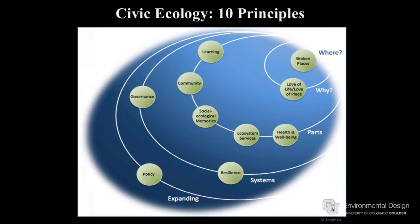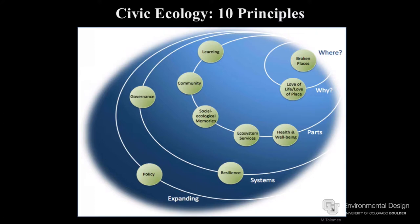When we did the MOOC — the Massive Open Online Course — we developed a schematic of the ten principles of civic ecology. I'm going to go through these principles quickly. We divided them into different orbits: where and when, what are the parts, and then three more that zoom out to look at how practices interact with larger systems. We'll start with where and why.